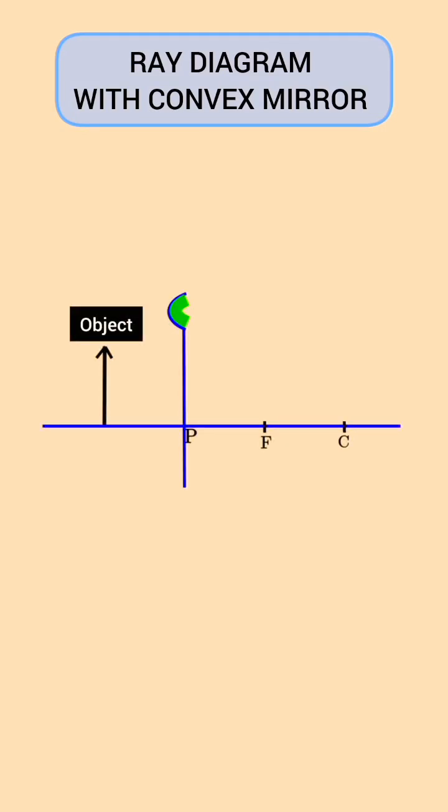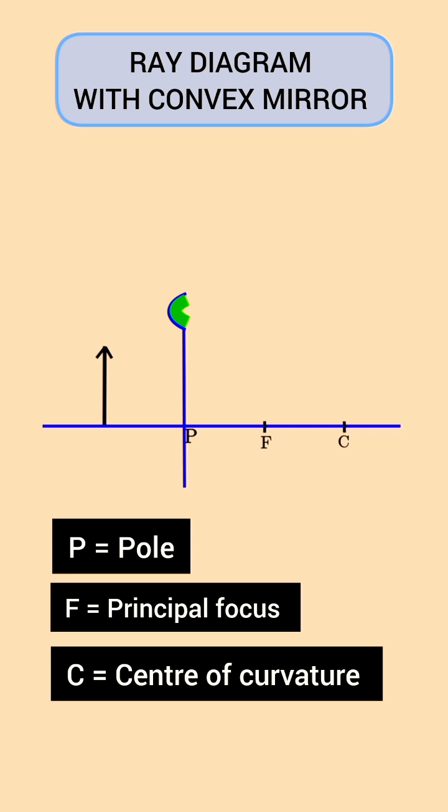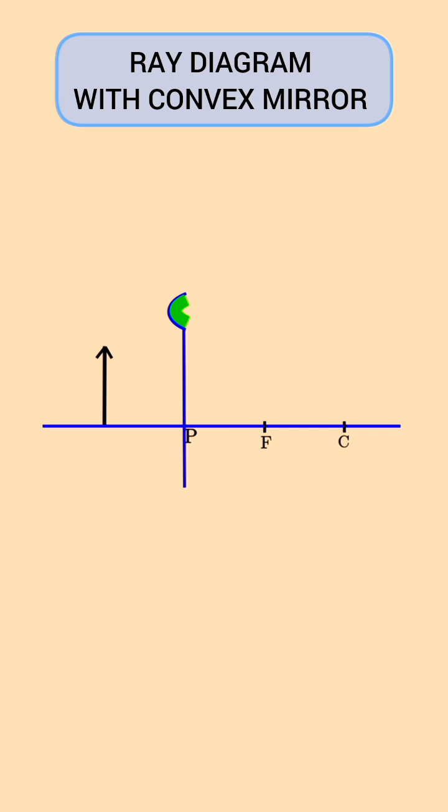The diagram shows an object placed in front of a convex mirror. We are going to draw a ray diagram to locate the position of the image and hence state its characteristics.